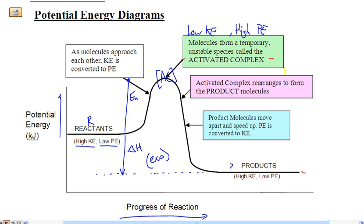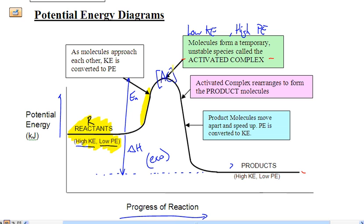In terms of energies: the reactants start with high kinetic and low potential energy, meaning they are moving very fast with not much stored energy. As they approach each other, the negative repulsive forces get stronger and stronger, and the potential energy builds and builds. If they collide with enough energy to break those repulsive forces, they'll form the activated complex and then the products.